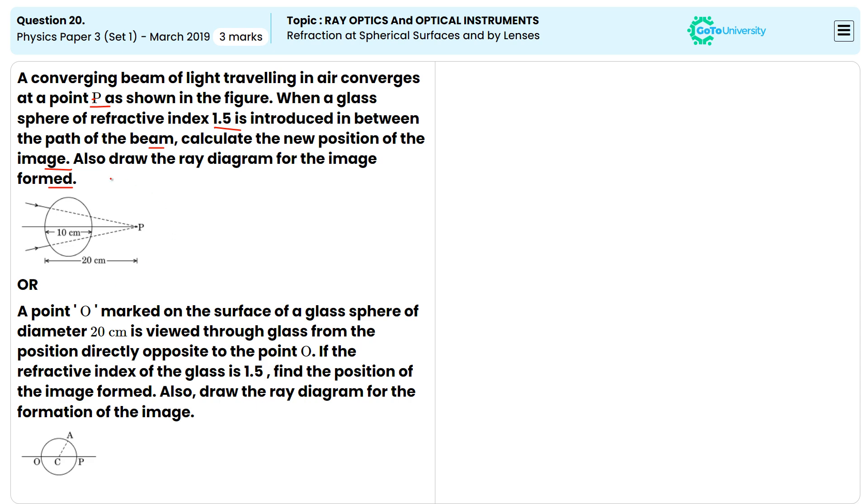Okay, this is the converging beam of light traveling in air that converges at point B. When a glass sphere of refractive index 1.5 is introduced in between the path, this is that one. Then we need to find here the new position of the image.